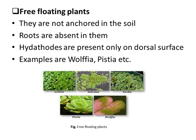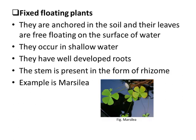Fixed floating hydrophytes are anchored in the soil and their leaves are free floating on the surface of water. They occur in shallow waters. They have well-developed roots. Their stem is present in the form of a rhizome. Their example is Marsilea.